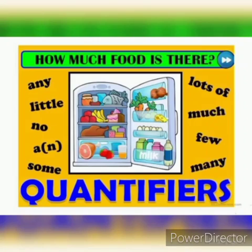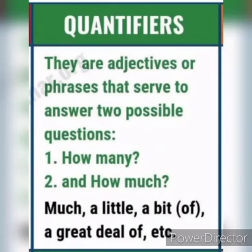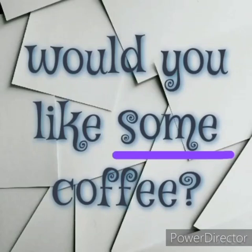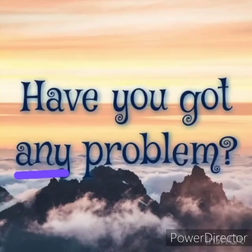The fourth kind of determiner is quantifiers. Quantifiers determine the approximate number or amount of plural nouns. Words like 'some', 'any', 'much', 'many', 'more', 'little', 'few', and 'less' are quantifiers. For example: 'She bought some butter.' 'Would you like some coffee?' 'Have you got any problem?'